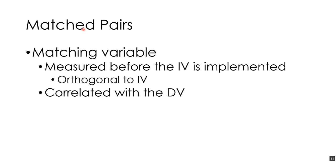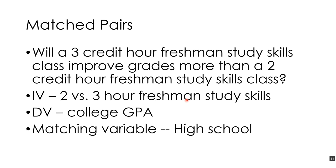A subcategory of dyadic data is matched pairs. This involves a matching variable — something measured before the independent variable is implemented. The matching variable must be orthogonal to (independent of) the independent variable, meaning uncorrelated with it. But it must be correlated with the dependent variable. This creates arbitrary pairs of people on an important variable, reducing variability due to subjects in your experiment.